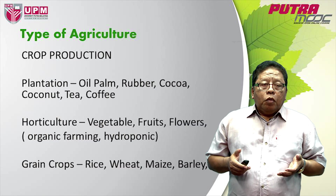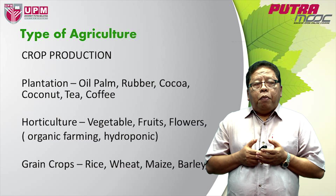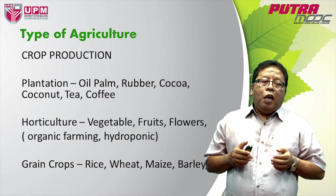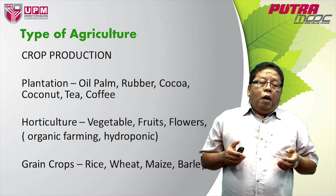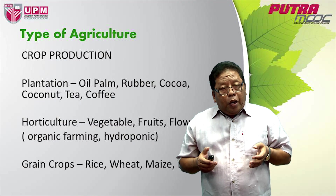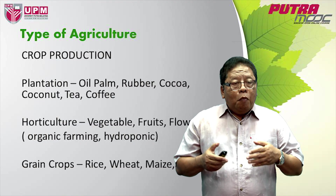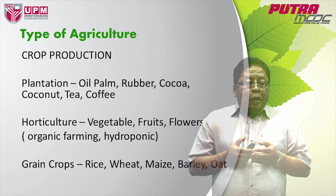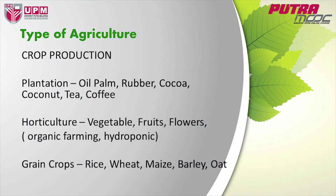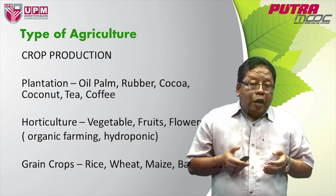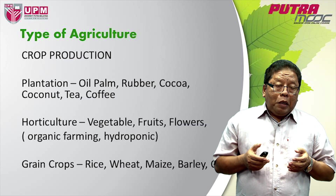What are the types of agriculture that we see today — the commercial agriculture? Here we have what we call plantation agriculture. Normally in plantation agriculture, perennial crops are being planted, like oil palm, rubber, cocoa, coconut, tea, coffee, and many fruit trees.